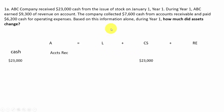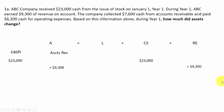Next transaction: ABC earned $9,300 revenue on account. We would increase accounts receivable on the asset side by $9,300, and on the right side we'll increase retained earnings — which is a revenue — for $9,300. Both sides went up by $9,300 and everything's good.